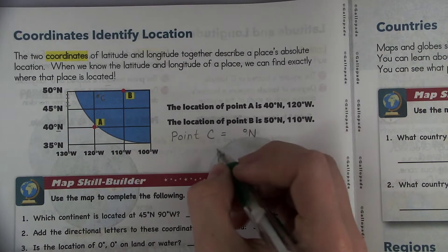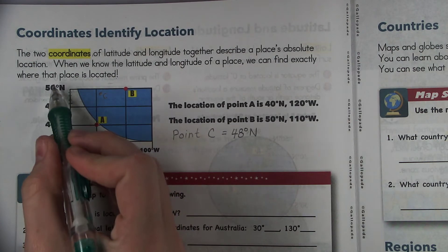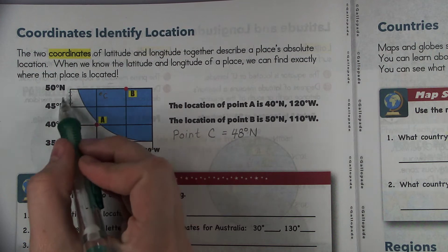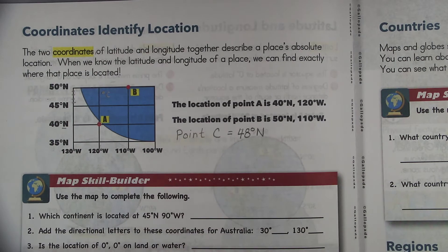So I'm going to say it's at 48 degrees north because notice it's between 45 and 50, it's not between 45 and 40. So it's between 45 and 50 and it's closer to the 50 side so it would be about 48 degrees north.